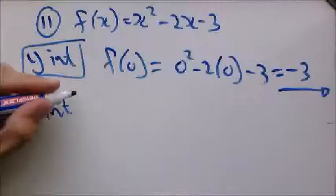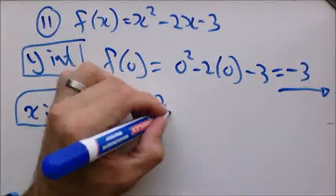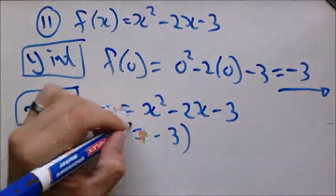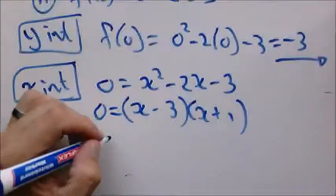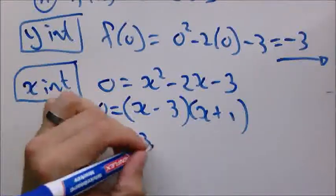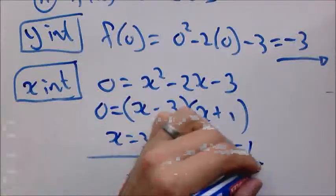For the X intercept we make Y 0. And now we can factorize. And get our X intercept coordinates.